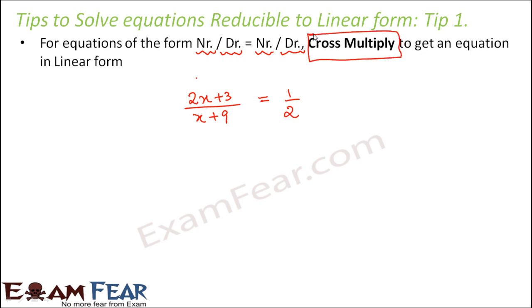Now what do we mean by cross multiply? Cross multiply means you multiply the denominator on the right hand side to the numerator of left hand side. Similarly you multiply the denominator of left hand side with the numerator on right hand side. So that is called cross multiplication.